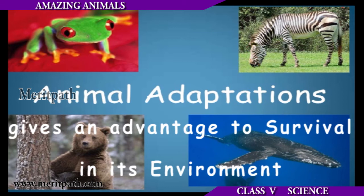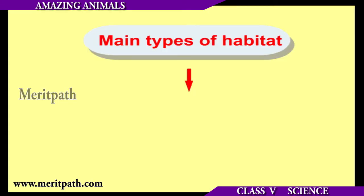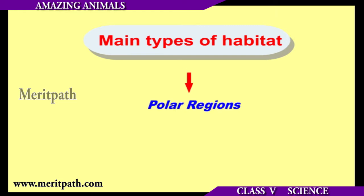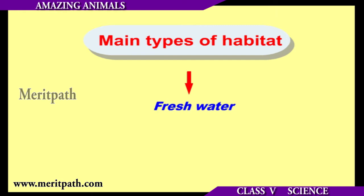The main habitats for animals are forests, deserts, polar regions, high mountains, oceans, and fresh water.